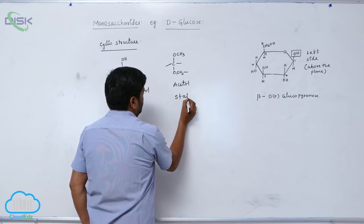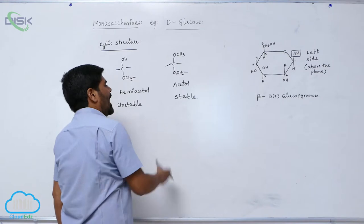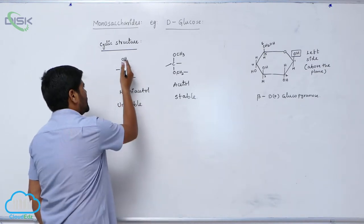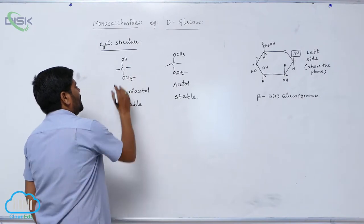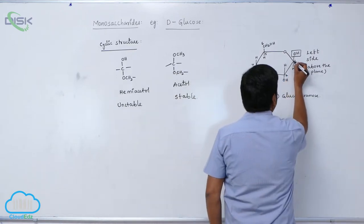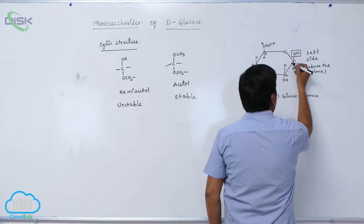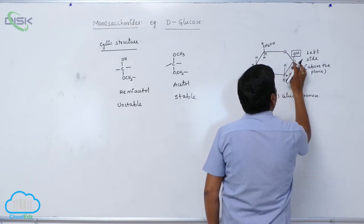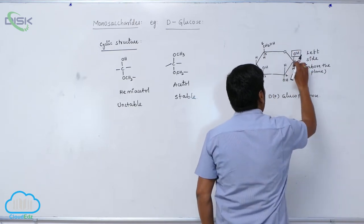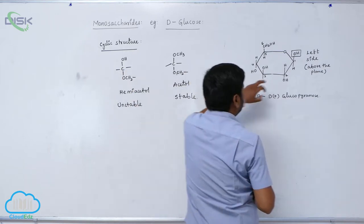Acetals are the more stable ones. So when Tollens' reagent is added to a hemiacetal, ring opening takes place immediately. This particular linkage — C-O-C with a free OH group — is known as a hemiacetal linkage.